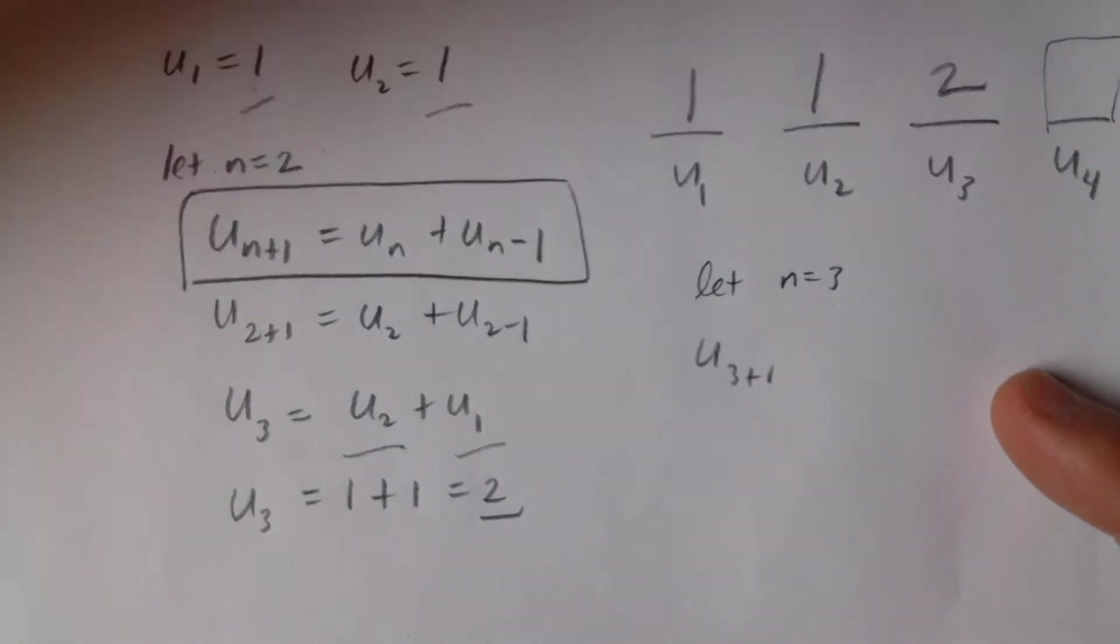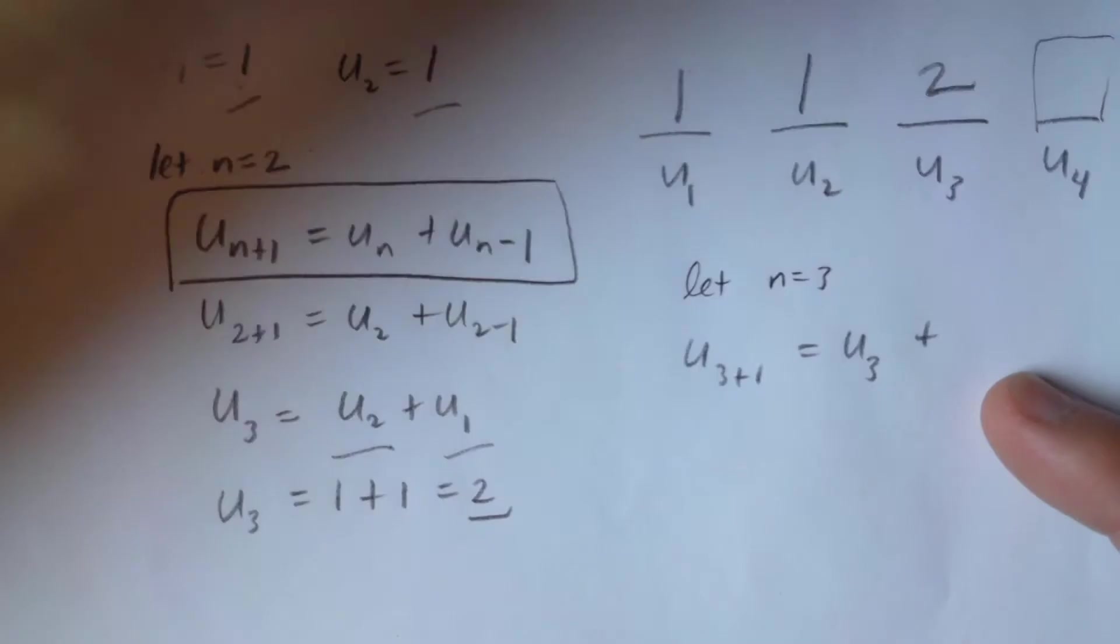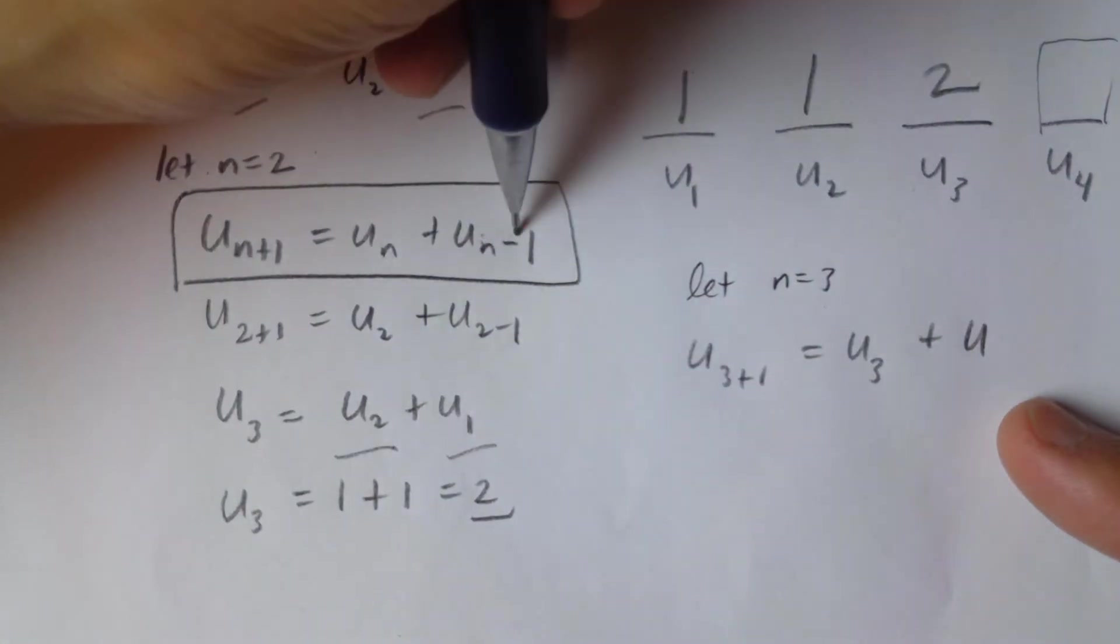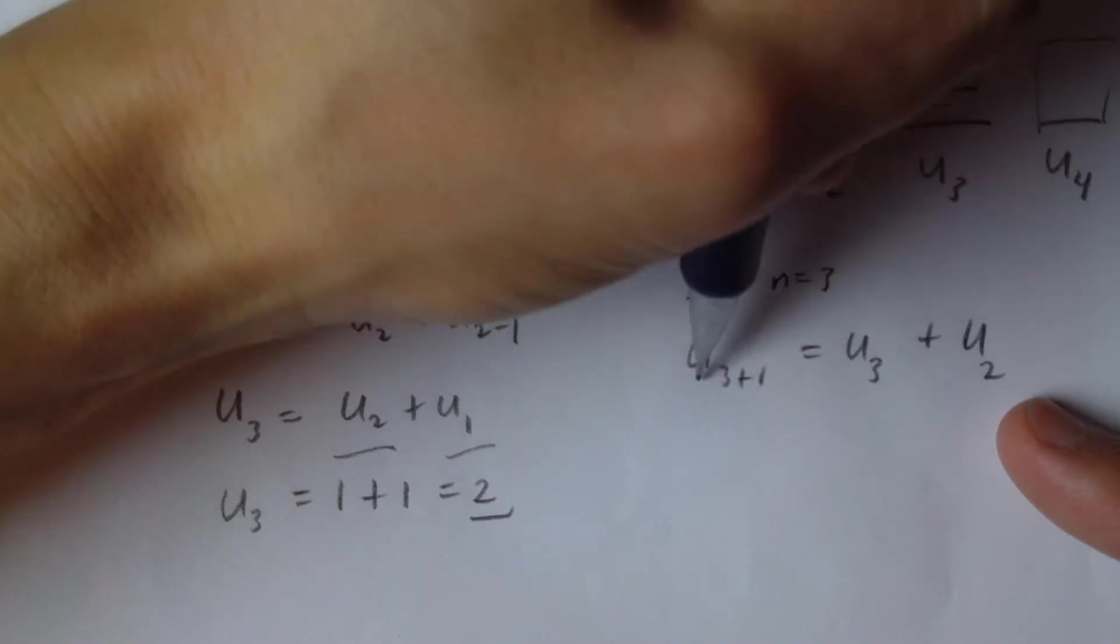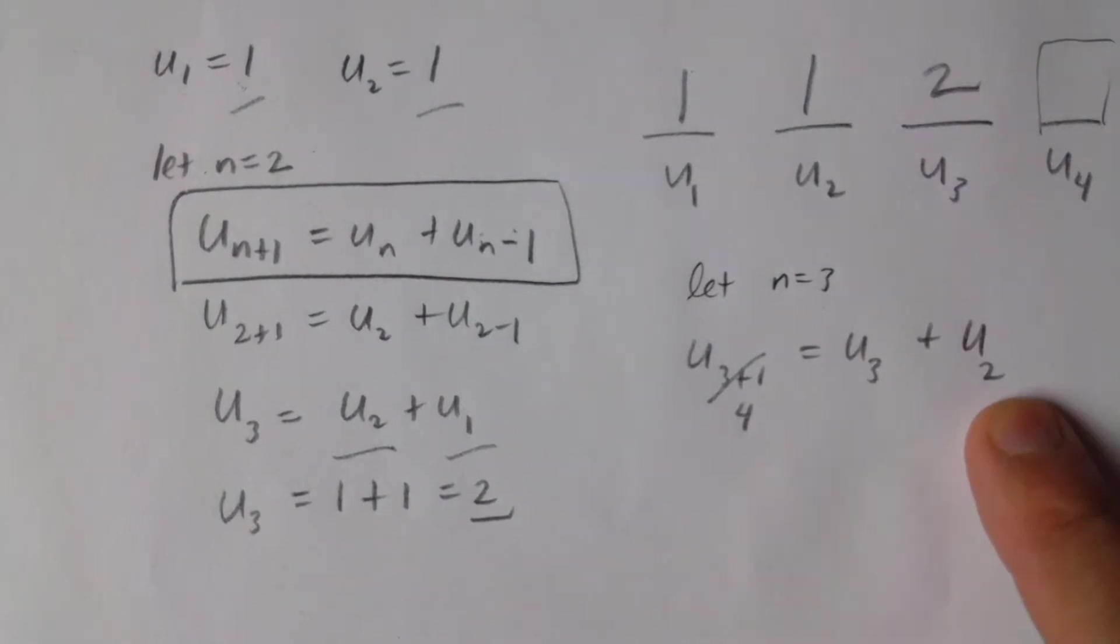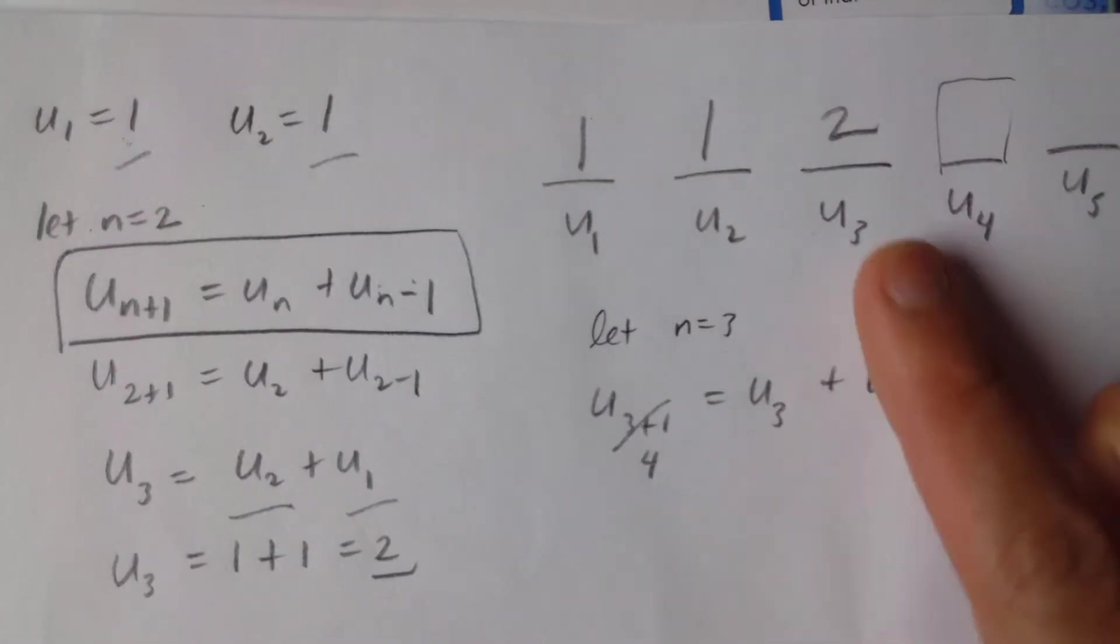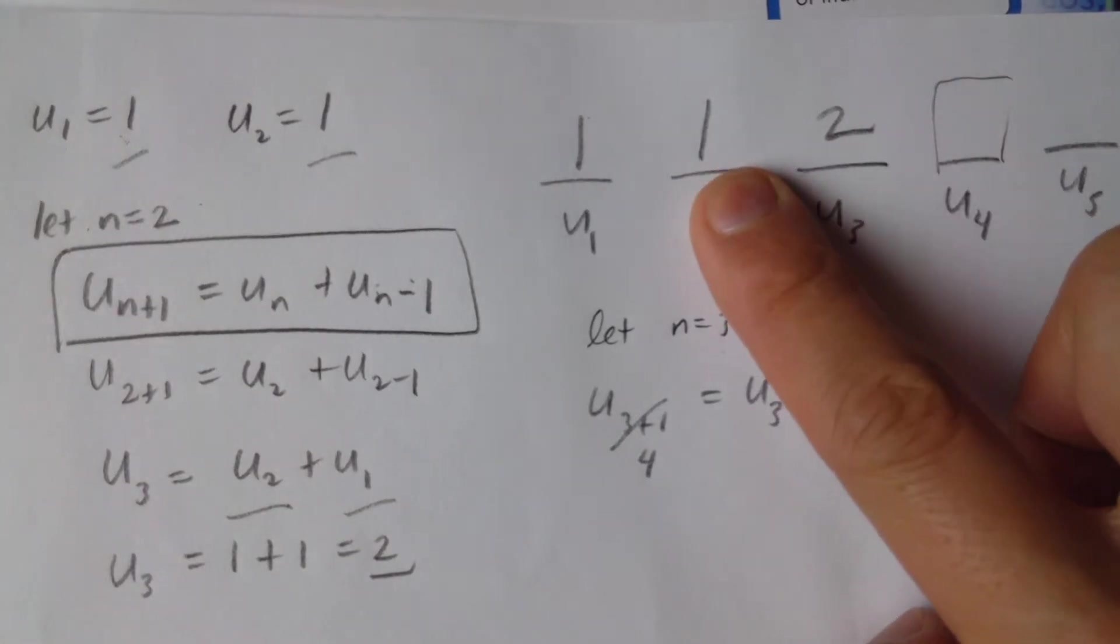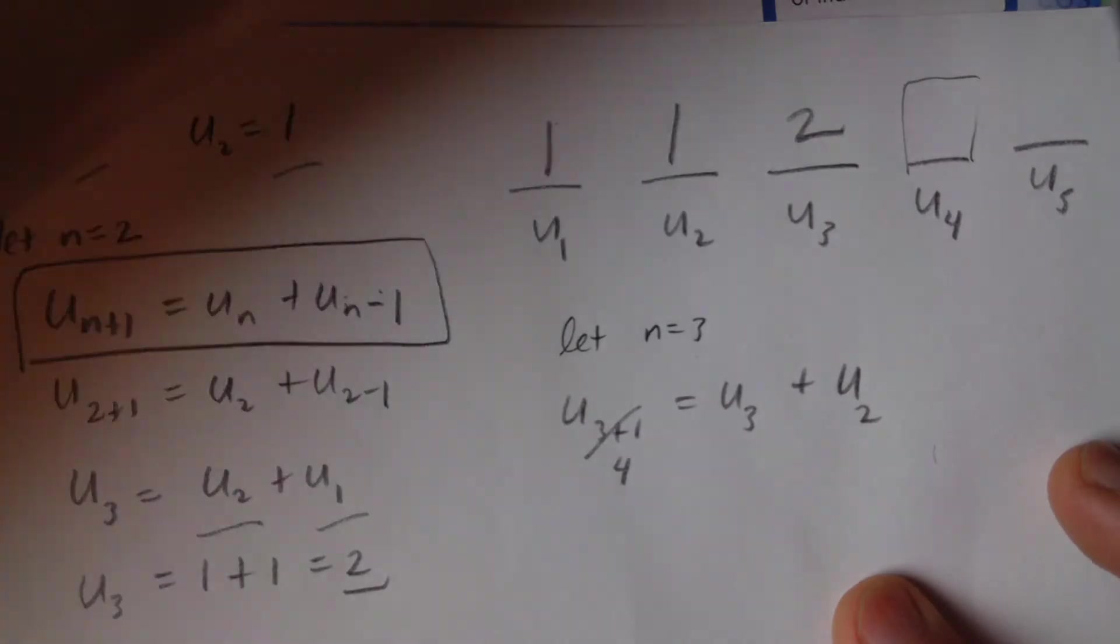u4 equals u_n, u3, plus the previous term, u3 minus 1 is going to be 2. So essentially, this fourth term is going to be the previous term plus the previous previous term. So as you can see, u3 is 2, plus the previous previous is going to be 1. 2 plus 1 happens to be 3.